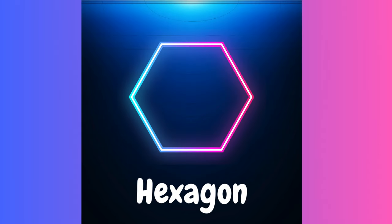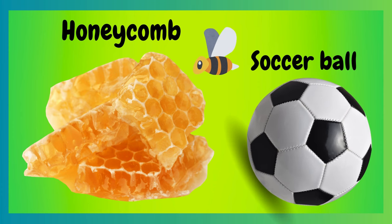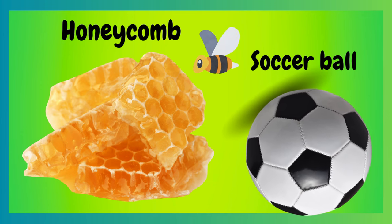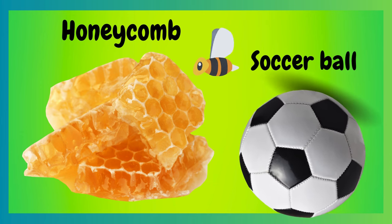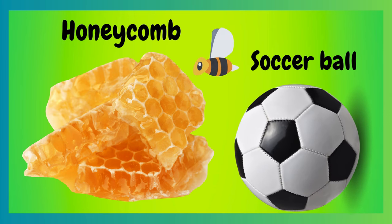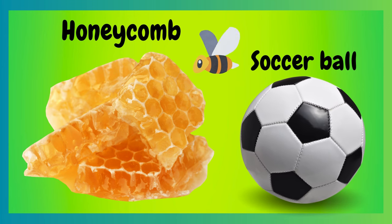This is a hexagon. Can you say hexagon? This is a flat shape with six points. Let's look at some examples of a hexagon. Here we have a honeycomb and a soccer ball. A honeycomb is where bees lay their eggs, and this is where you get that delicious honey. And what's so special about the soccer ball? It's a sphere and it has hexagons on it — that's two shapes in one.